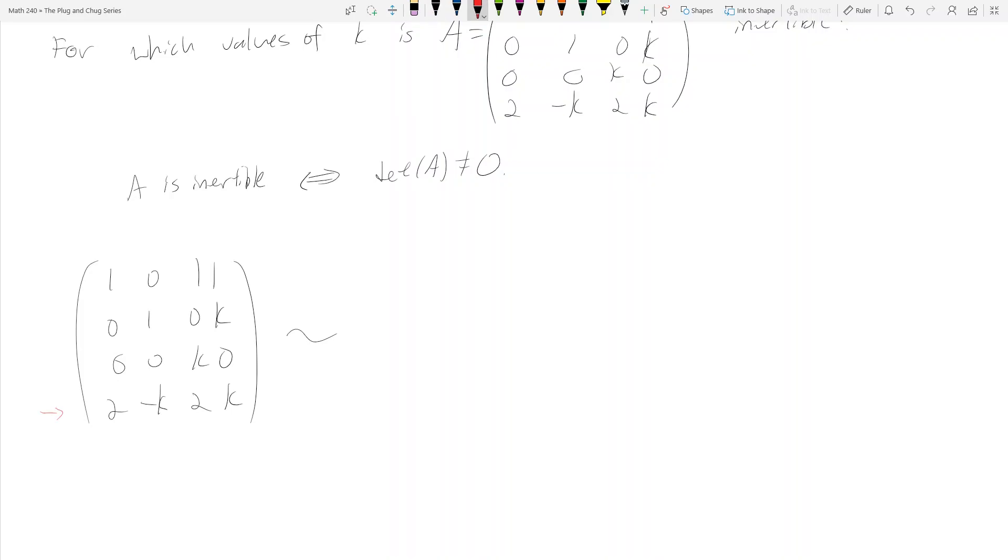So here I get [1 0 1 1; 0 1 0 K; 0 0 K 0; 0 -K 0 K-2]. And what's next? Now I'm going to take this last row again and add K times the second row.